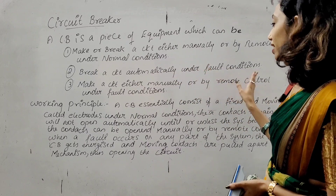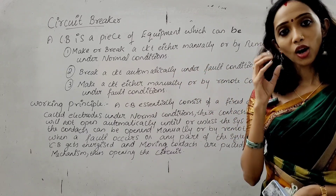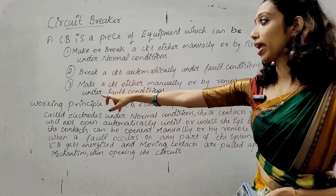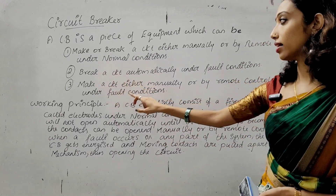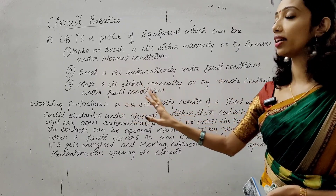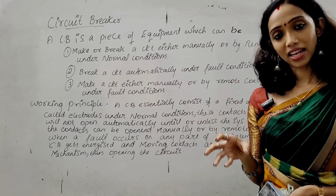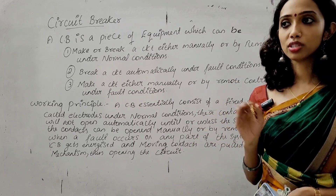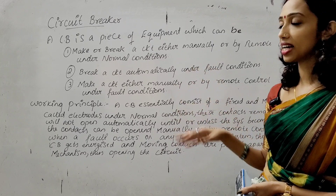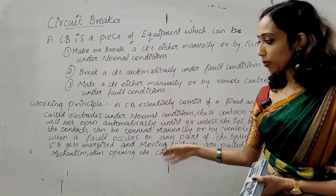Automatically under fault condition — when it comes to the circuit, you can automatically break the circuit. Then make a circuit either manually or by remote control under fault condition. So in fault condition, manually or by remote control, you can make a circuit breaker. This is the working principle.